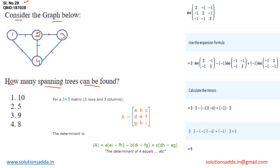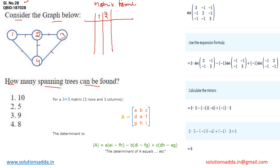We have to use the matrix formula to calculate the total number of spanning trees. First, we need to make the adjacency matrix of this graph. On the x-axis and y-axis, write the labels of the vertex names: 1, 2, 3, and 4. In the diagonal, we will write the degree of each vertex.